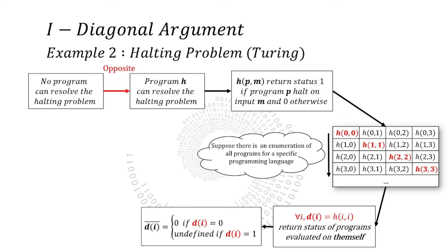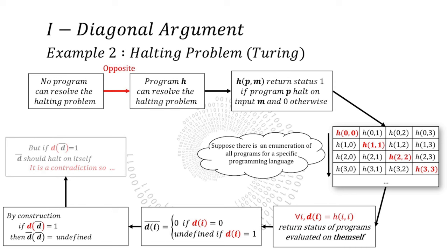It's hard to say. Let's assume it halts. Then by construction counter D of D is 1. But since counter D is doing the opposite of D, counter D evaluated on itself should not halt. So maybe it doesn't halt. But if it doesn't halt, D of counter D is 0. But again, counter D does the opposite of D. So it should also halt.